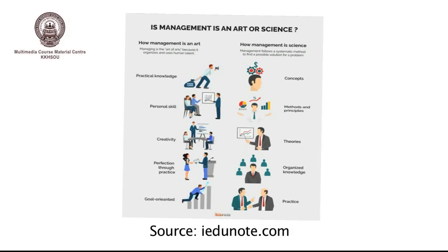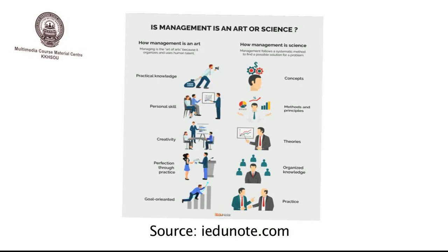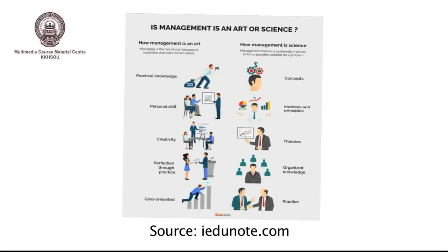That's why we consider management as science. On the other hand, practical knowledge, personal skills, creativity, perfection through practice, and goal orientation are also very essential for management. These factors are considered as arts. Because of that, we consider management as a blending of both science and arts.